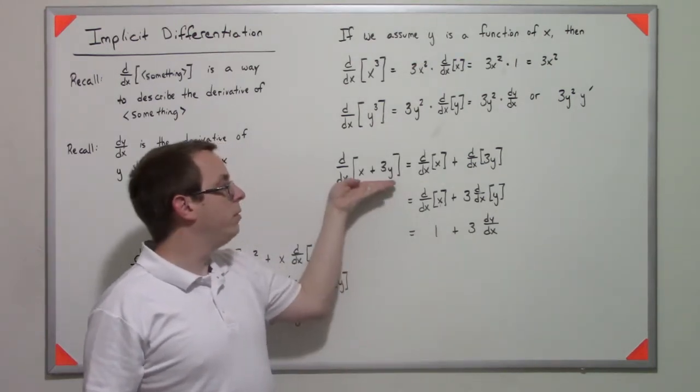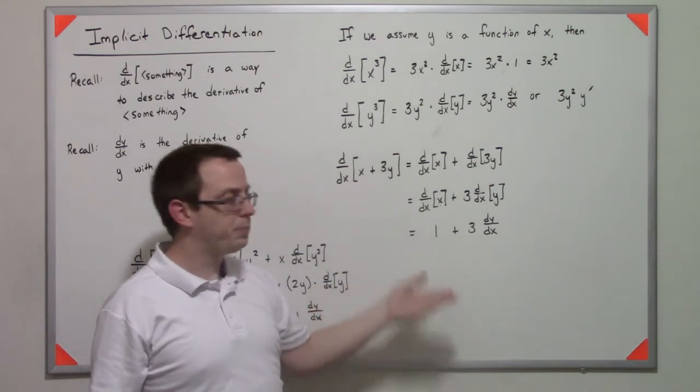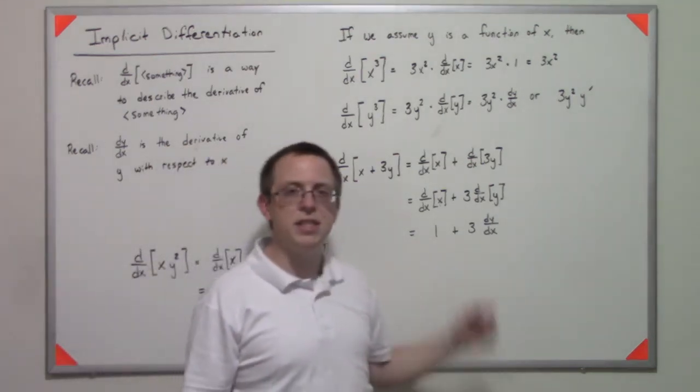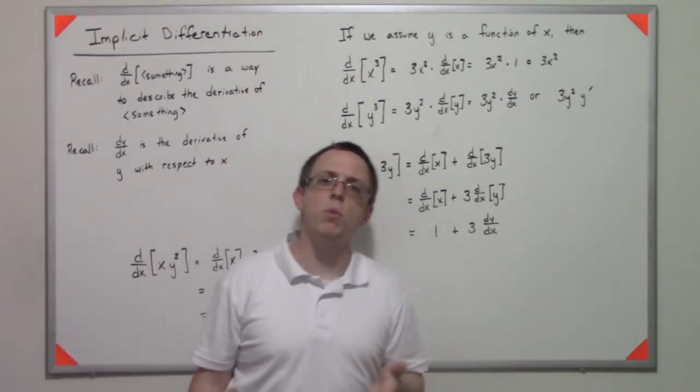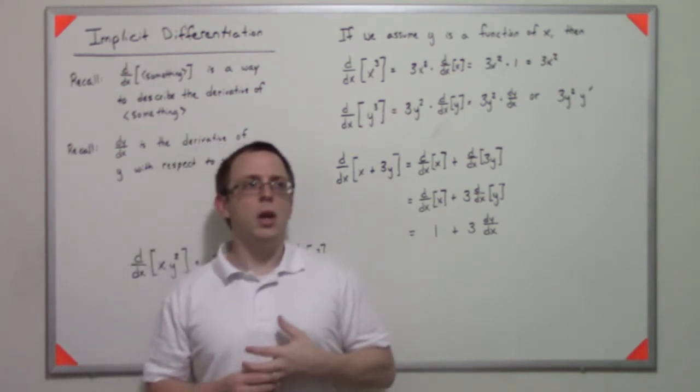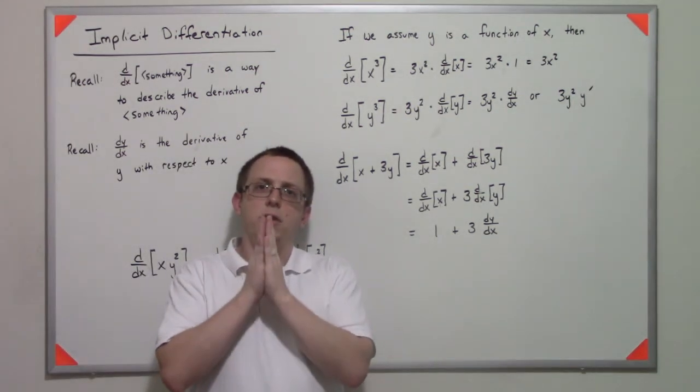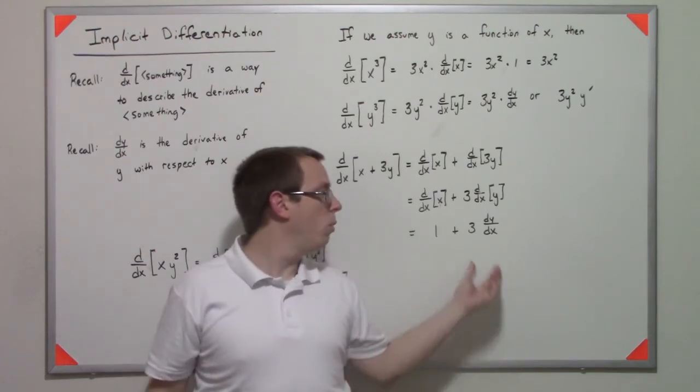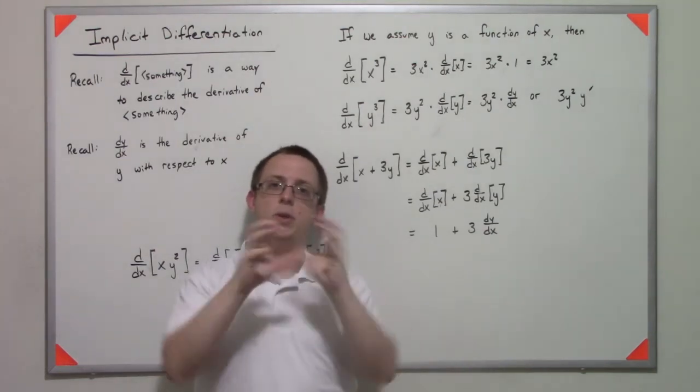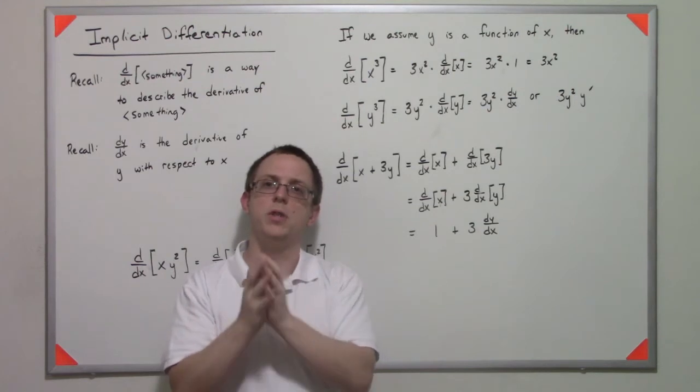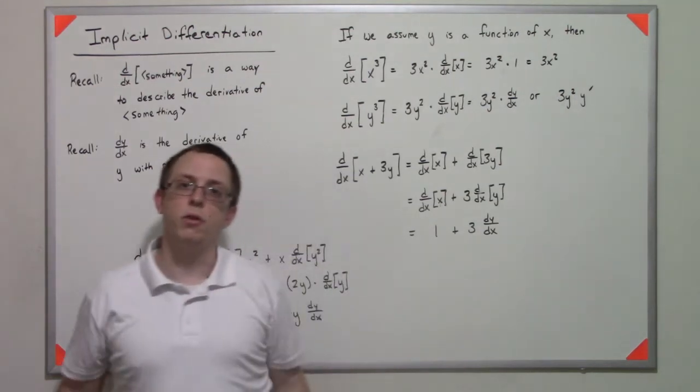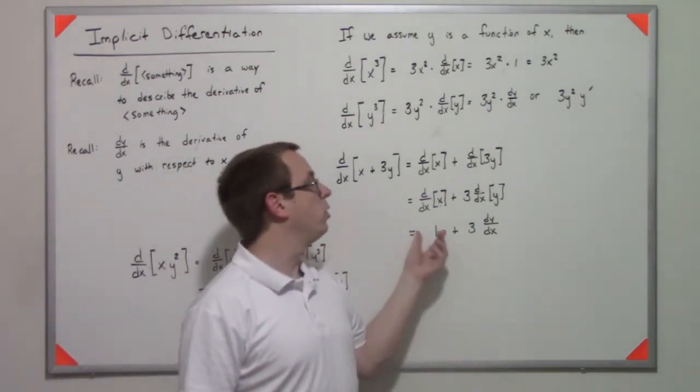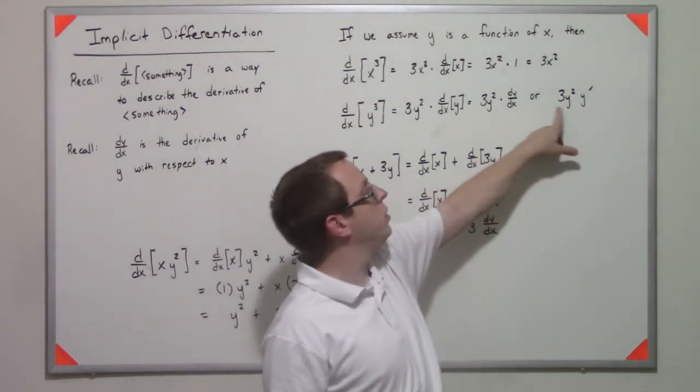Notice we have these dy/dx's, and the reason we're going to do that is because we're going to be finding the value of the derivative at specific points. What we're going to be able to do is get all the dy/dx's by themselves and then plug in for the values that still exist, whether they're y's or x's. In this case notice we still have a y² even after the derivative.